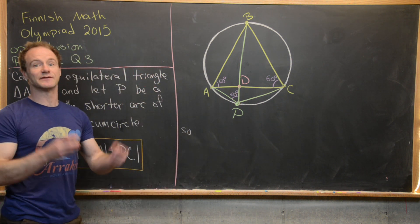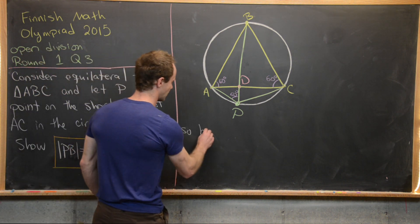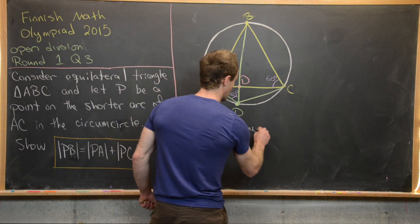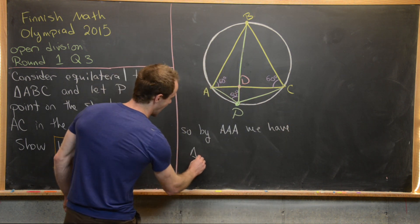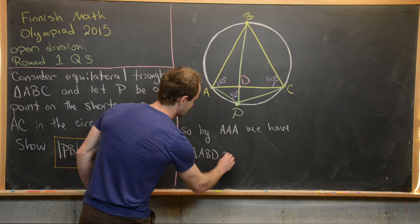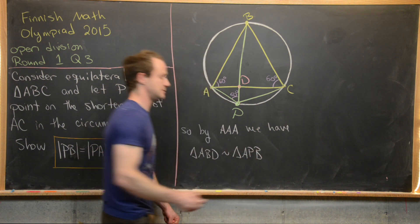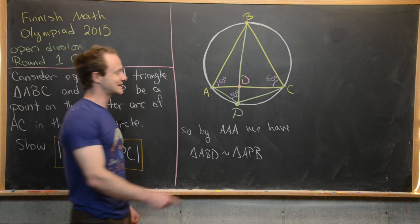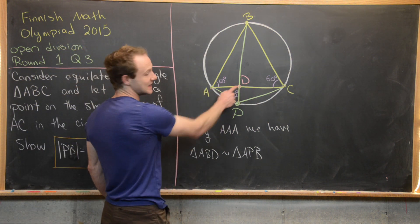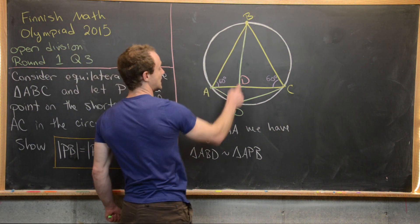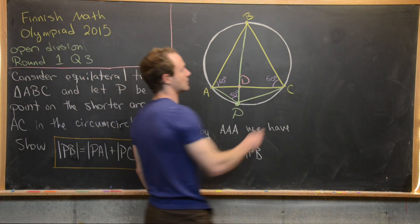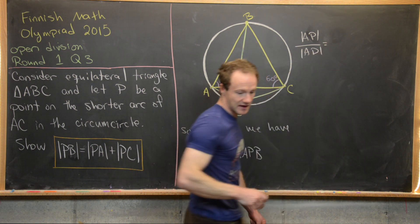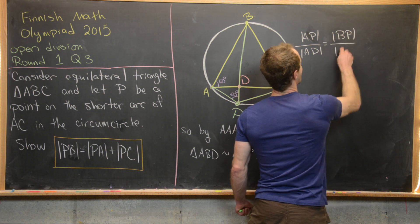Angle-angle-angle gives us similarity of triangles, not congruence. So by the AAA theorem for similarity, triangle ABD is similar to triangle APB. Similarity gives us equal ratios of side lengths: AP to AD equals BP to AB.